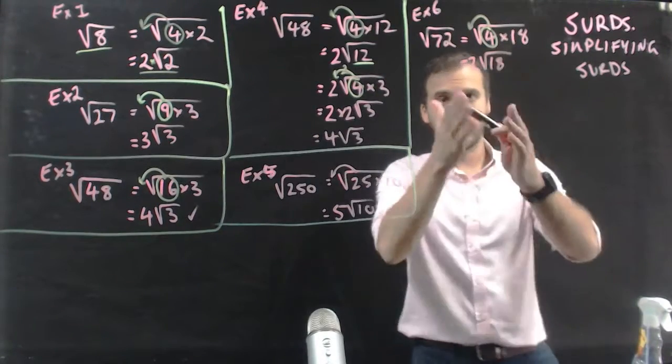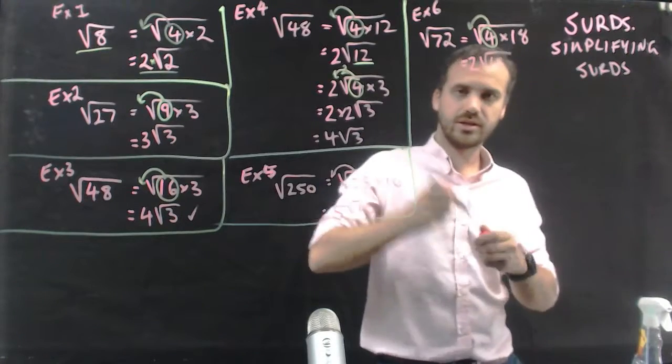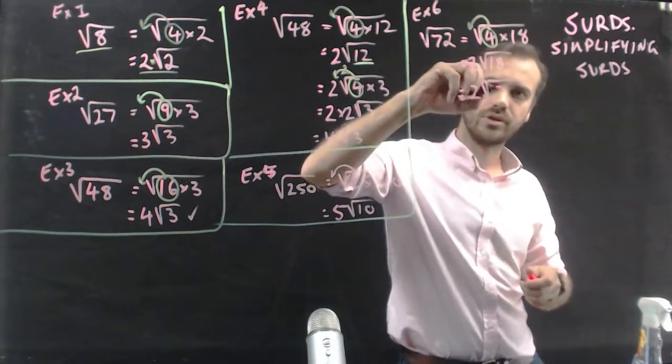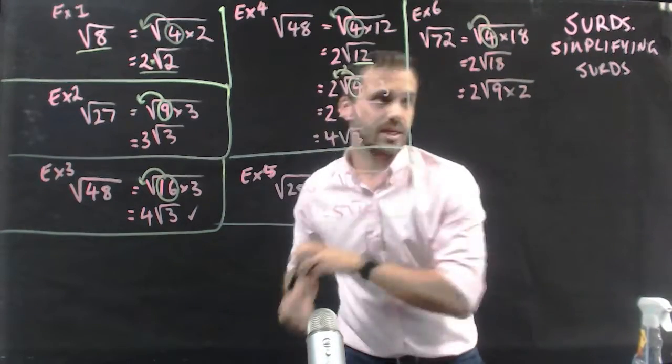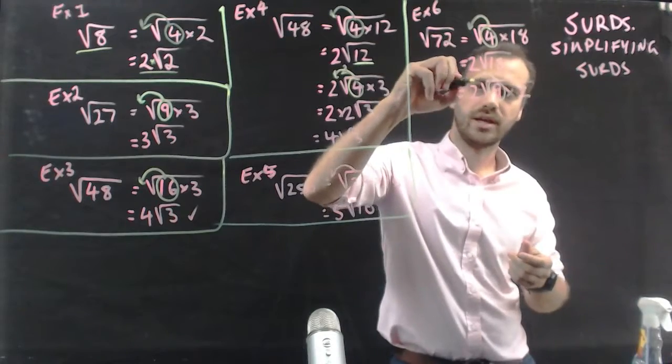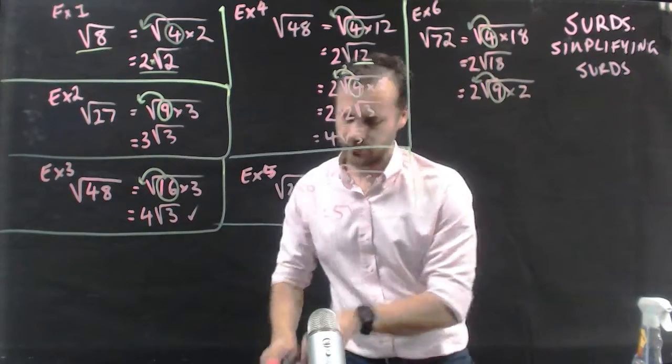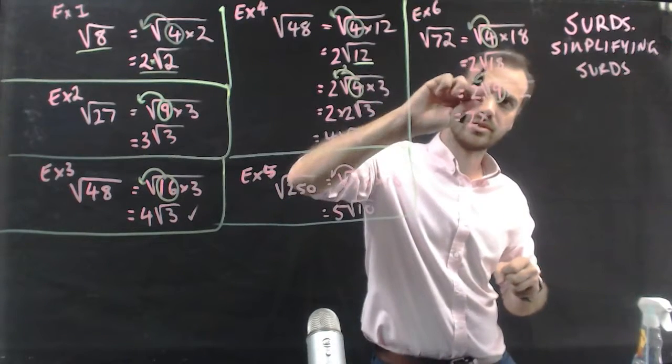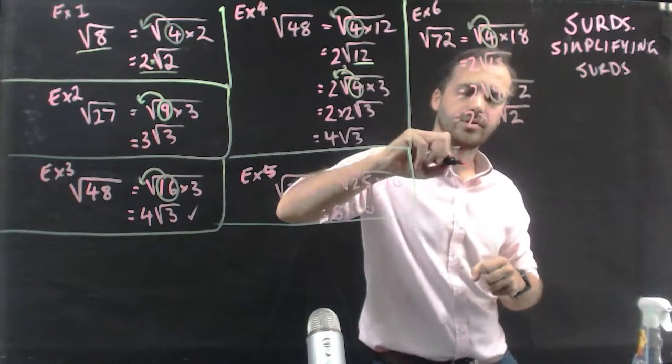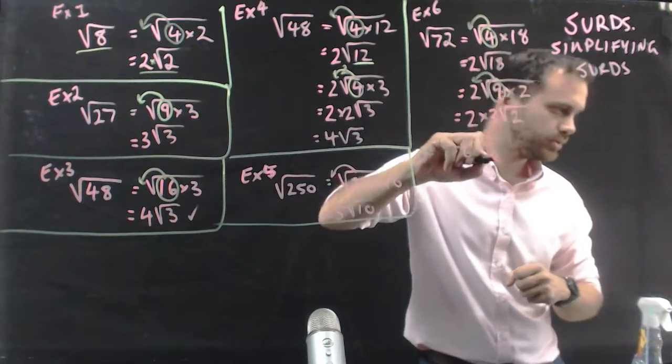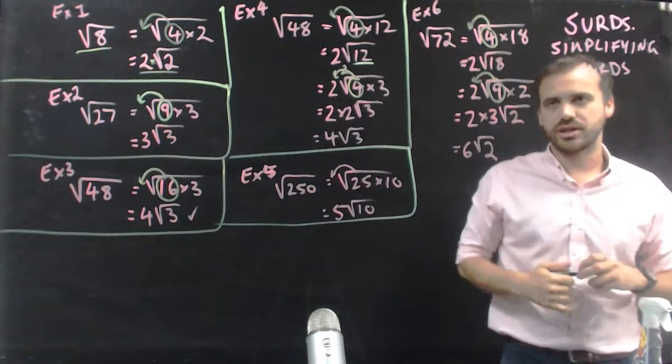Now, stop, think, 18. Can I find a square root inside of 18? I think I can. 2 root 9 times 2. Now, again, take the 9, move it out of here, I end up with 2 times, 9 comes out and becomes 3, root 2. 6 root 2. Okay, so you can see it's another 2 stager there.